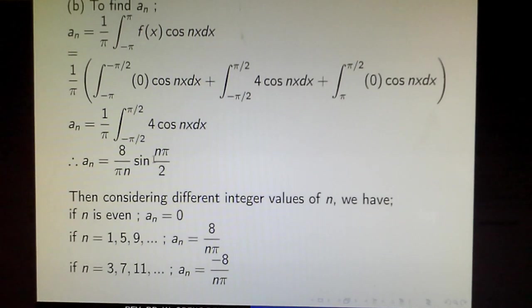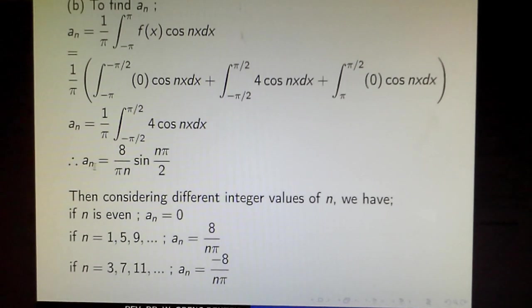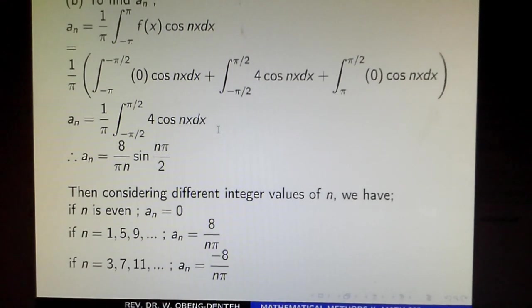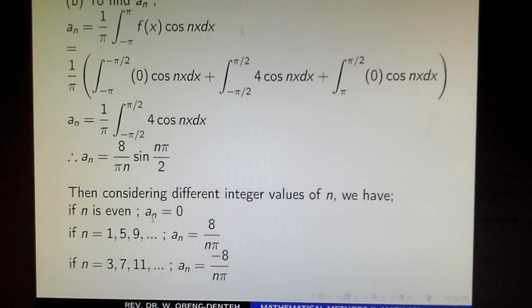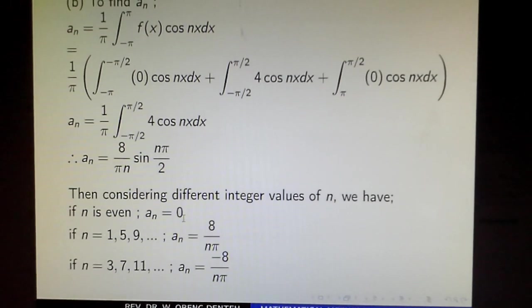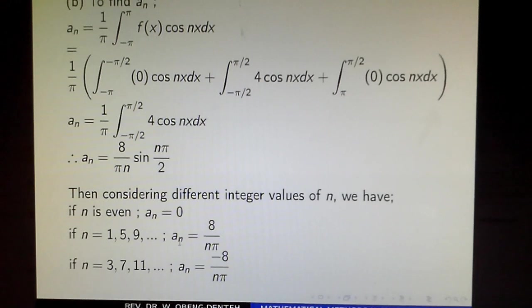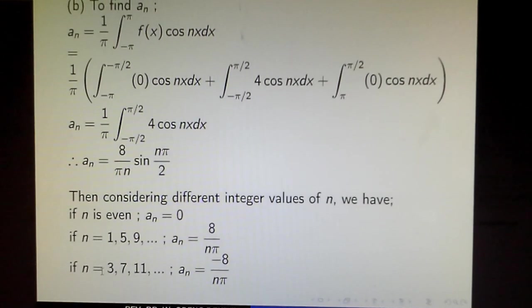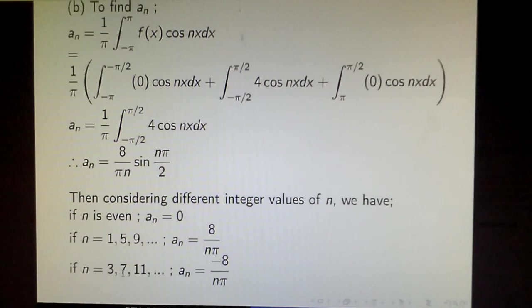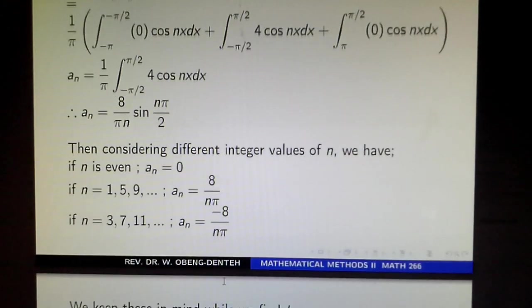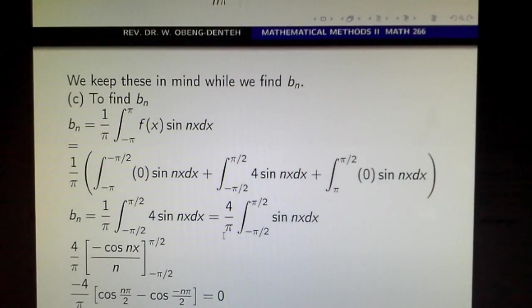a_n = (8/πn)sin(nπ/2). Considering different integer values of n: if n is even, then a_n = 0; if n is odd (n = 1, 5, 9,...), we get a_n = 8/nπ; if n = 3, 7, 11,..., we get a_n = -8/nπ. We keep this in mind while we...